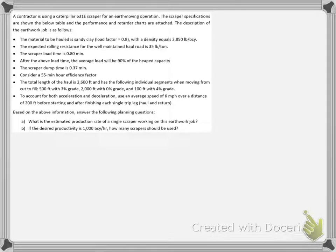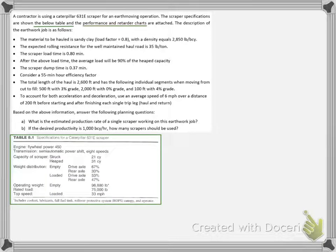In this exercise, I will walk you through the production calculations of a scraper operation. The contractor will utilize a Caterpillar 631E scraper, and its specifications are summarized in this table. We are also given its performance and retarder charts, which I will show later when we need them.